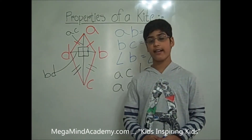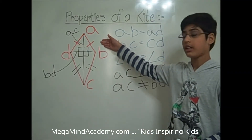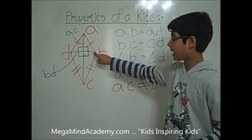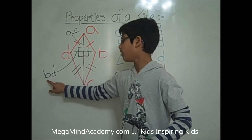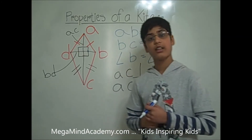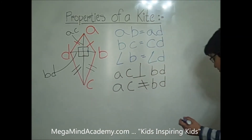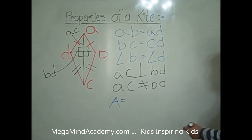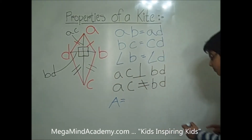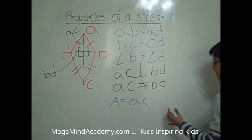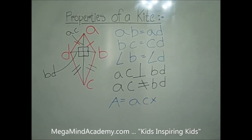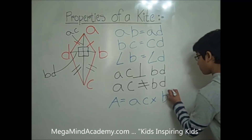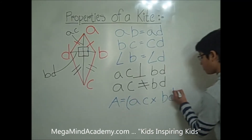One way to find the area of a kite is to do diagonal one — which in our case is diagonal AC — times diagonal two — which in our case is diagonal BD — over two. Let me write that out: Area = (AC × BD) / 2.